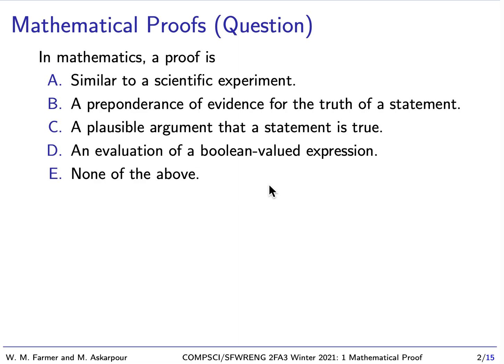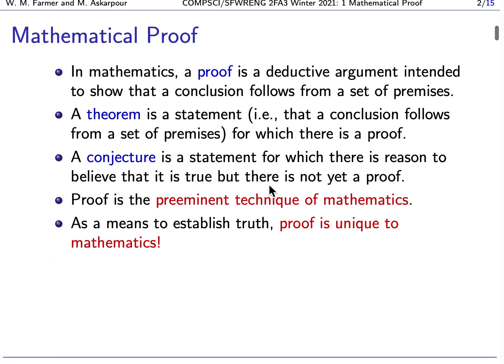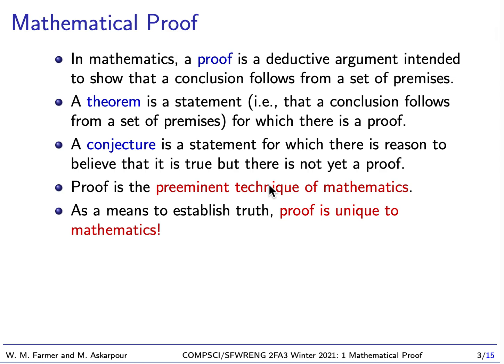So what is mathematical proof? In mathematics, a proof is simply a deductive argument that is intended to show that a conclusion follows from a set of premises. You start with a set of premises and deductively show that the conclusion follows. The statement that is proved is called a theorem. A conjecture is a statement for which we believe it is true, but we don't yet have a proof. Proof is the preeminent technique of mathematics — the most important technique for mathematical reasoning. All of mathematics is built on this idea of proof.